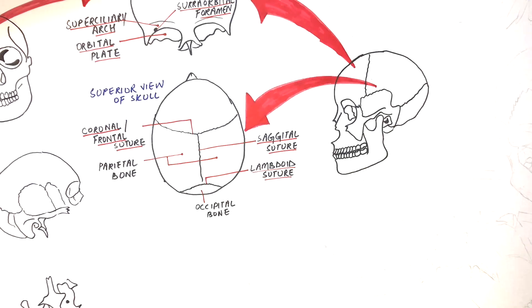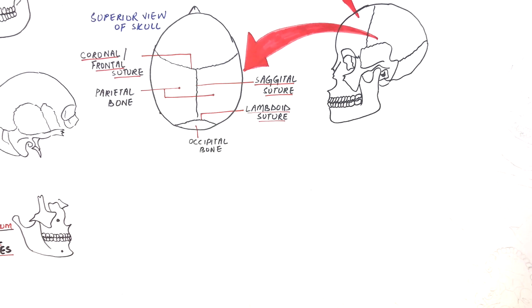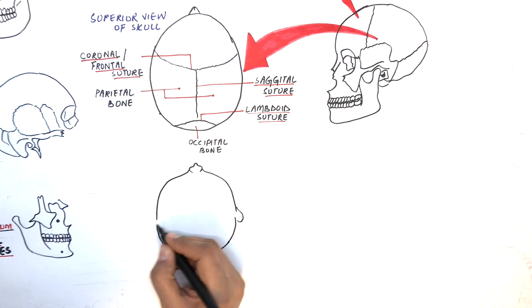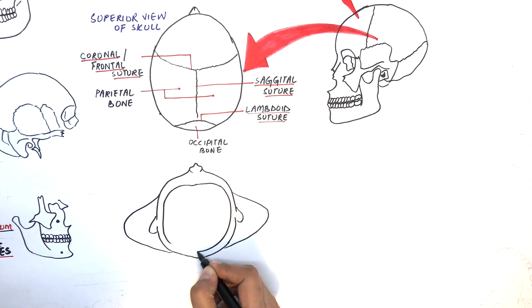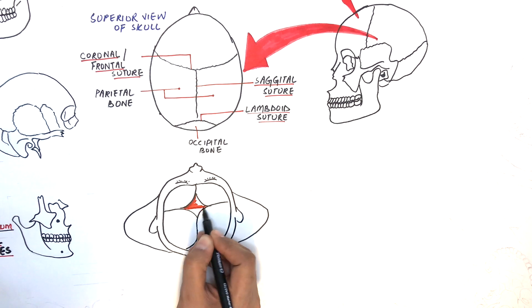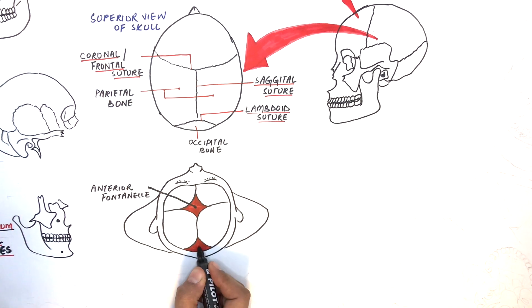These sutures, however, in a newborn exist as soft tissue spaces covered by a membrane and are called anterior and posterior fontanels. Fontanels allow for easy exit through birth canal and postnatal growth.